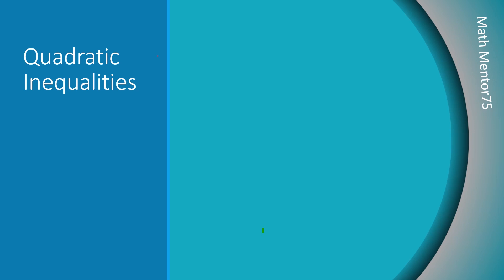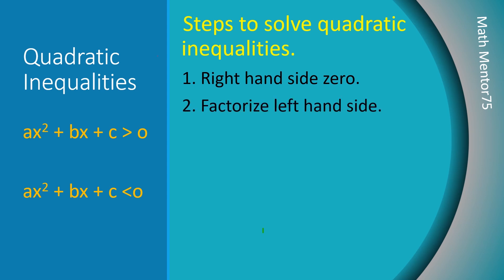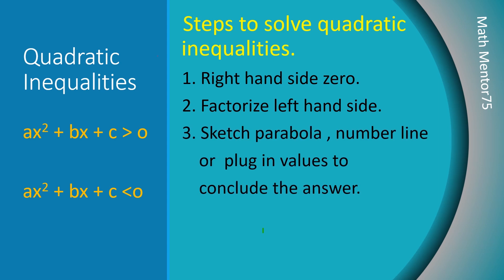Next is the quadratic inequality. A quadratic inequality is like a quadratic equation but instead of an equals sign we have a greater-than or less-than sign. To solve it: first make the right-hand side zero, then factorize the left-hand side. After that we have three options: use a parabola, draw a number line and find the corresponding range, or use a number line with plug-in values. In this video we will use both the parabola technique and the plug-in values method.